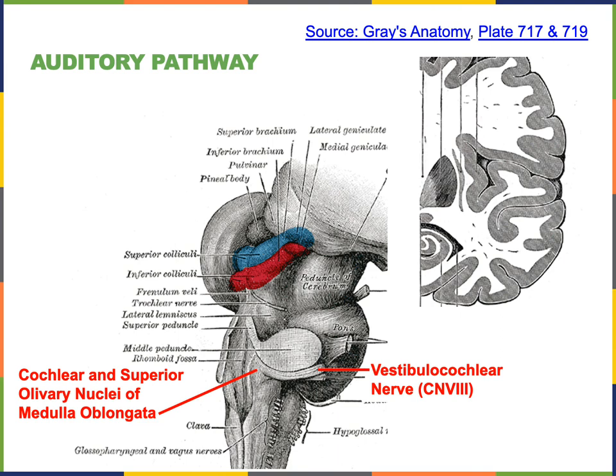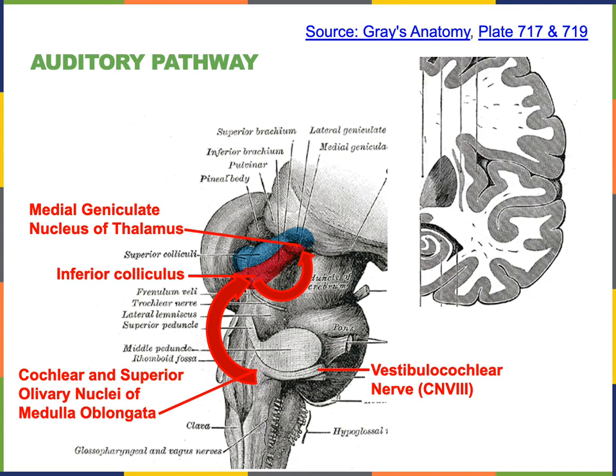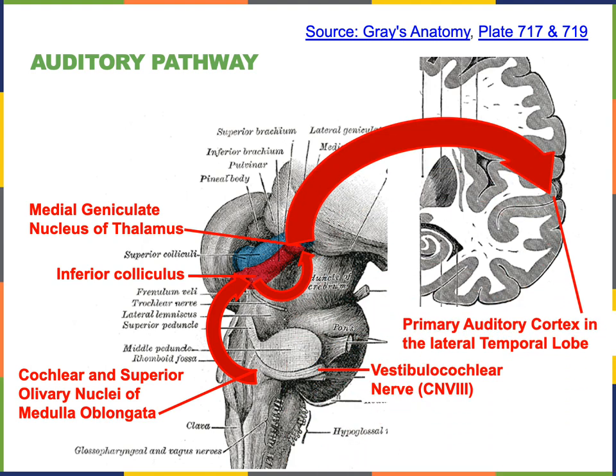Then the neurons of the medulla oblongata relay this sensory information to a region of the midbrain known as the inferior colliculus. The inferior colliculus neurons then relay information to the thalamus, specifically to a region known as the medial geniculate nucleus. From there, neurons relay sensory information to the primary auditory cortex in the lateral temporal lobe.